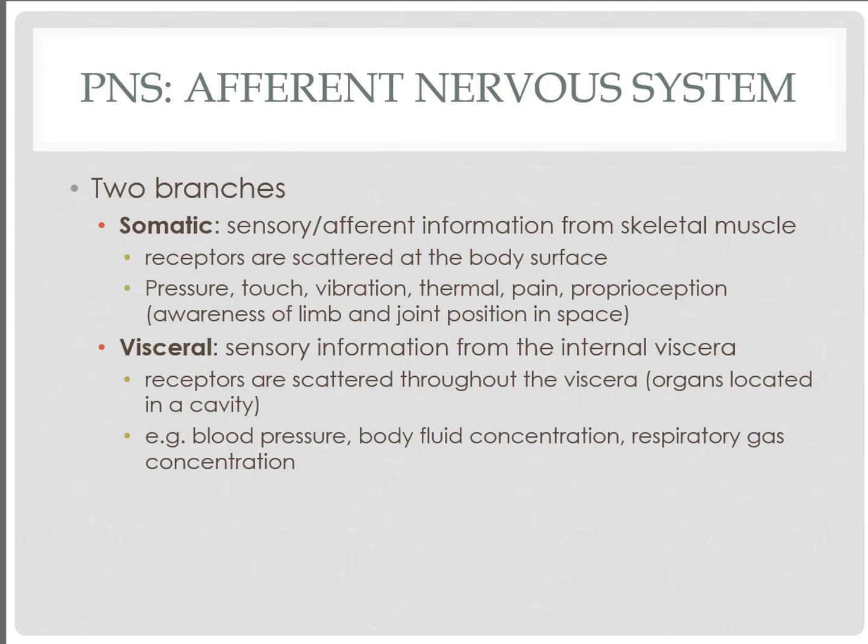All this sensory information can come into the central nervous system to help us adjust accordingly. For example, our natural body temperature of 98.6 degrees — visceral sensory receptors detect that temperature, and if we are higher than 98.6, our body will respond via a motor pathway to cool us down, which involves sweating.